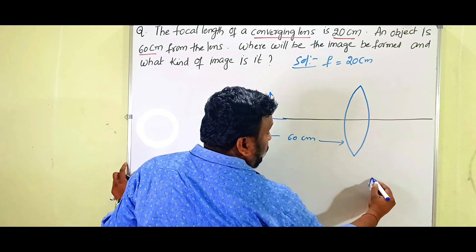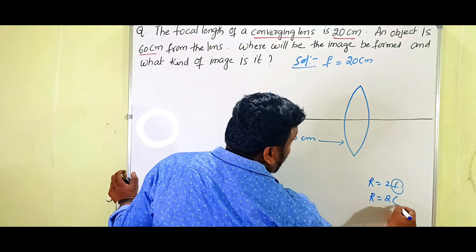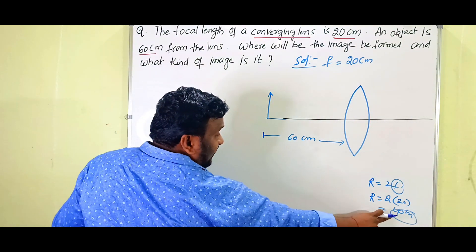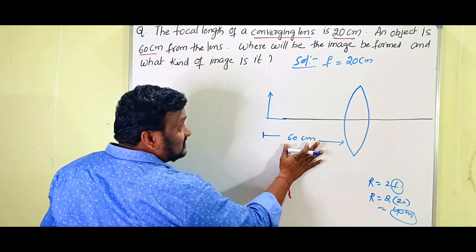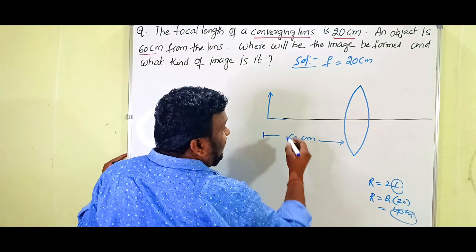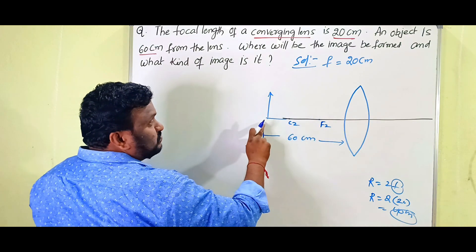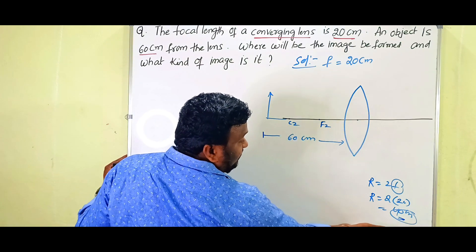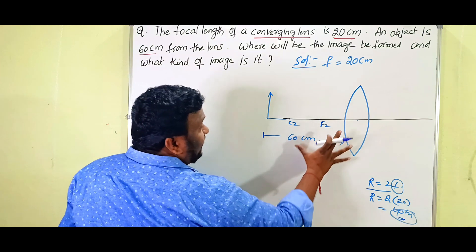We know R equals 2f. Since f is given as 20 centimeters, R equals 2 into 20, that is 40 centimeters. So the radius of curvature of the lens is 40 centimeters. But the object is at 60 centimeters, so the object must be beyond the center of curvature. The focal length is 20 centimeters and the center of curvature is at 40 centimeters.